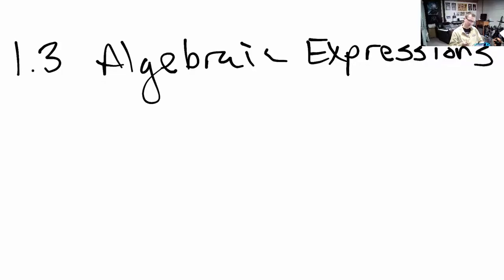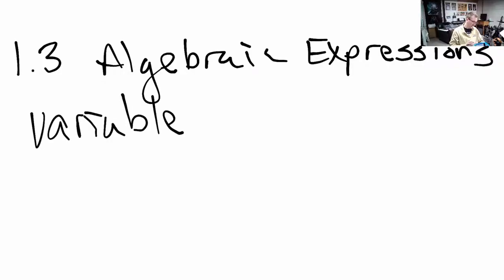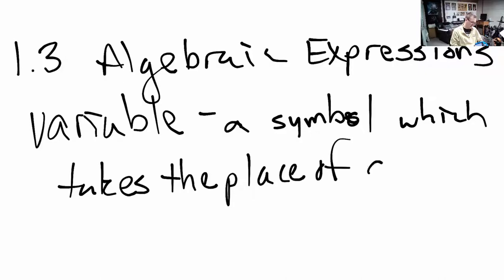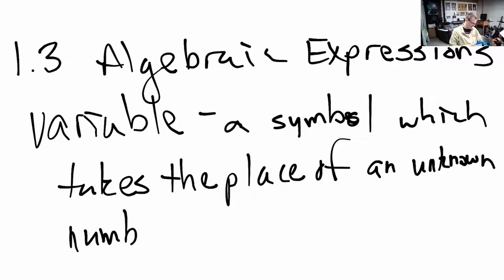First, I want to talk about something called a variable. A variable is a letter or a symbol which takes the place of an unknown number. Maybe it's something that you want to change at another time, or maybe it's something you just don't know. And so, you use a symbol to take the place of the number.